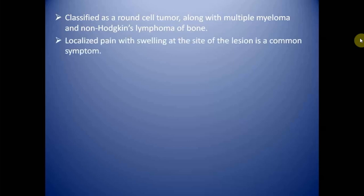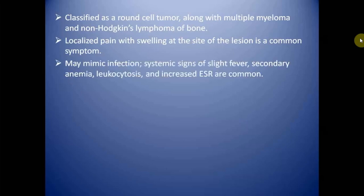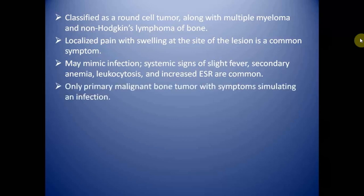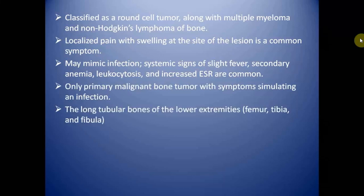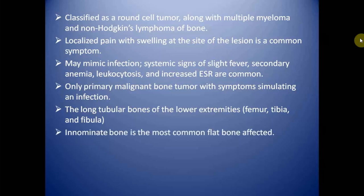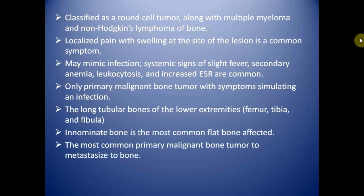Localized pain with swelling at the site of the lesion is a common symptom and it may mimic infection. Systemic signs of slight fever, secondary anemia, leukocytosis, and increased ESR are common. It is the only primary malignant bone tumor with symptoms simulating an infection. The long tubular bones of the lower extremities are most commonly affected. The innominate bone is the most common flat bone affected, and it is the most common primary malignant bone tumor to metastasize to bones.